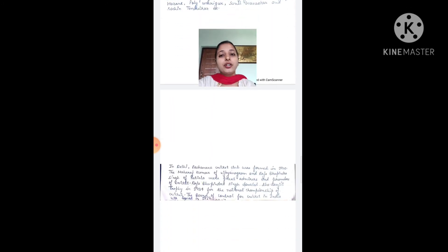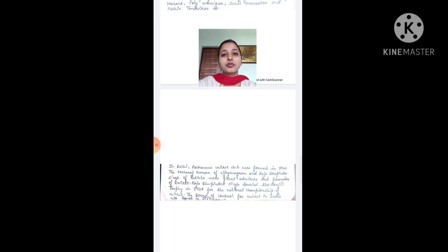In Delhi, the Roshana Cricket Club was founded in 1920. The Maharaj Kumar of Vizianagram and Raja Bhupinder Singh of Patiala were great admirers and promoters of cricket. Raja Bhupinder Singh donated the Ranji Trophy in 1934 for the National Championship of Cricket.